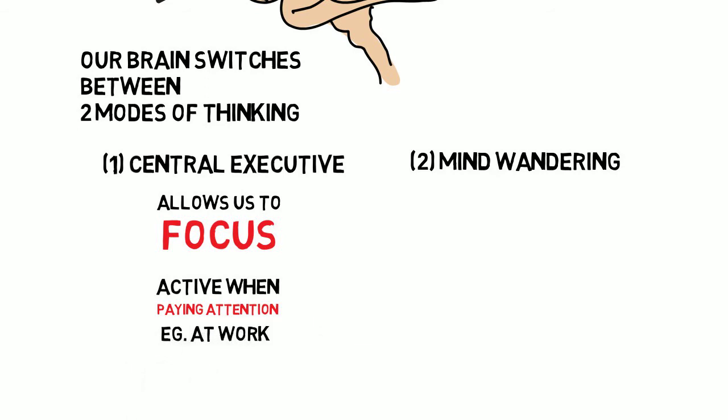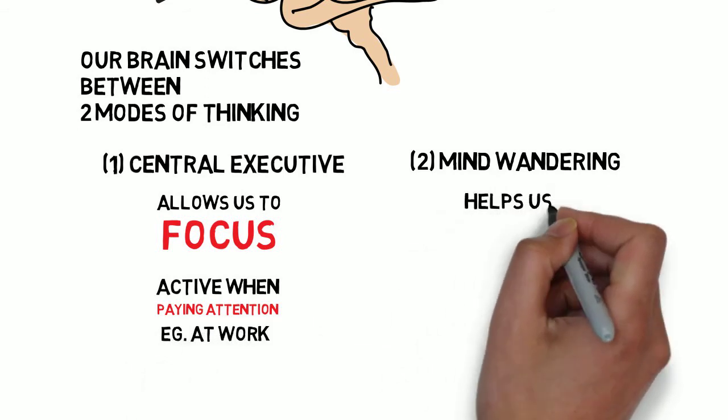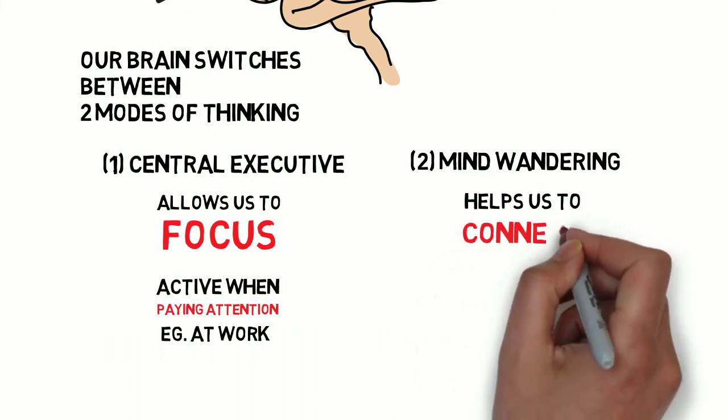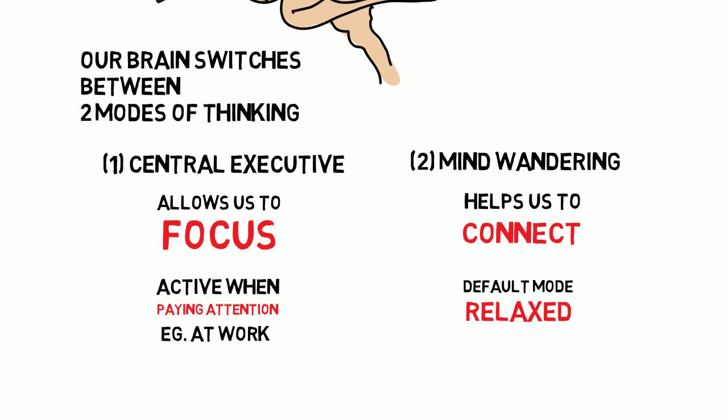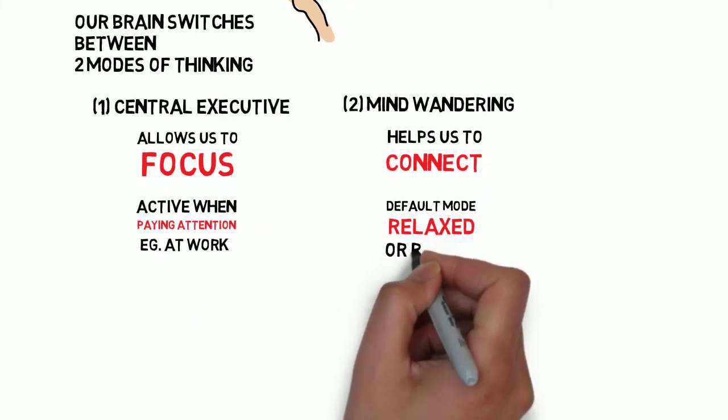The mind-wandering system, on the other hand, is what connects all different kinds of thoughts and ideas together. It's our default mode, so it's how we think when we're relaxed. And it's also what we're doing when we daydream.